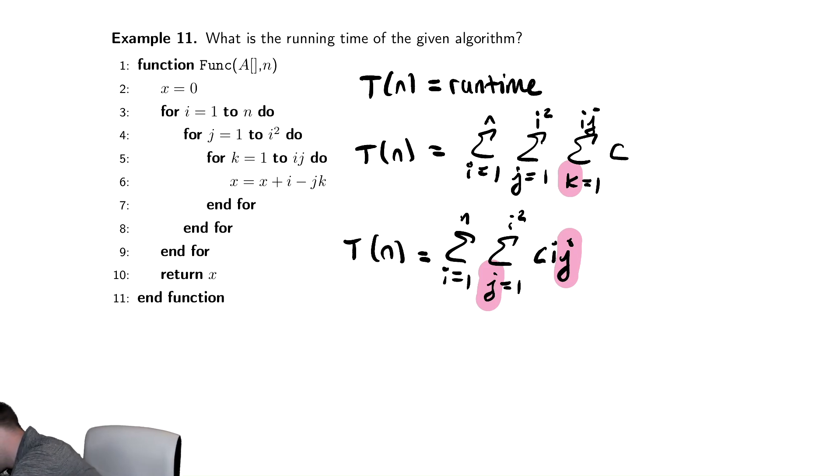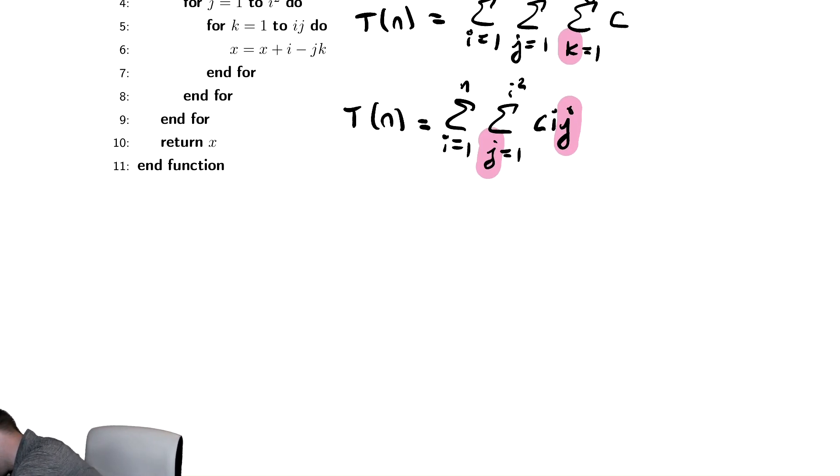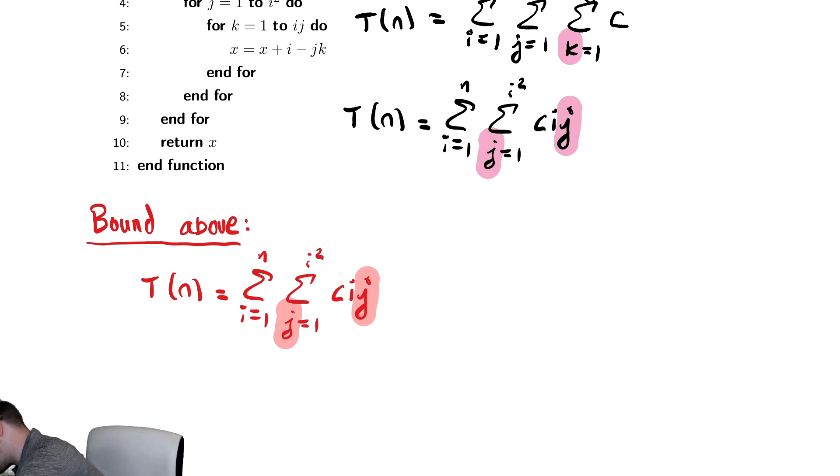So let's bound it above. So we need to bound above. And we need to take that summation that we had before. Let's duplicate that. We're going to do the exact same thing, but in red, and then maybe delete the highlight, save ourselves some time.